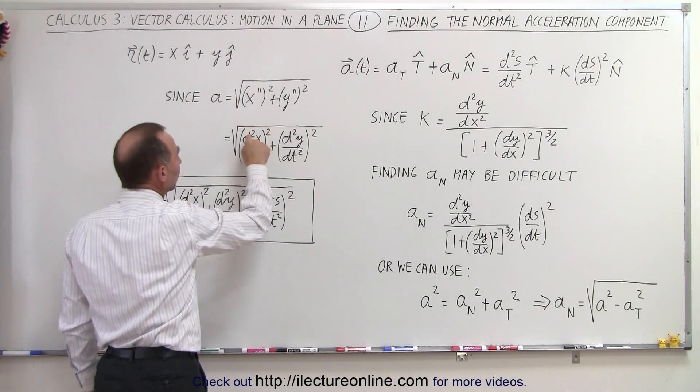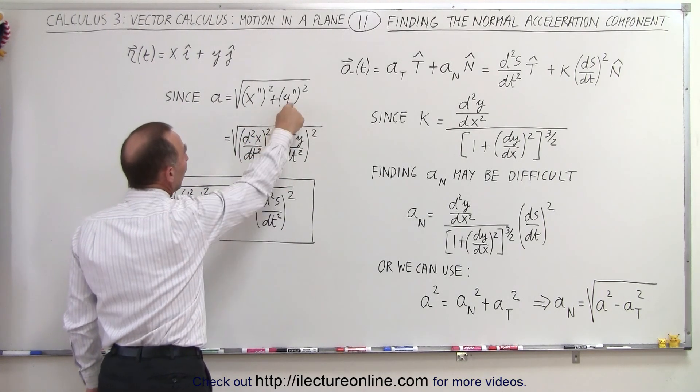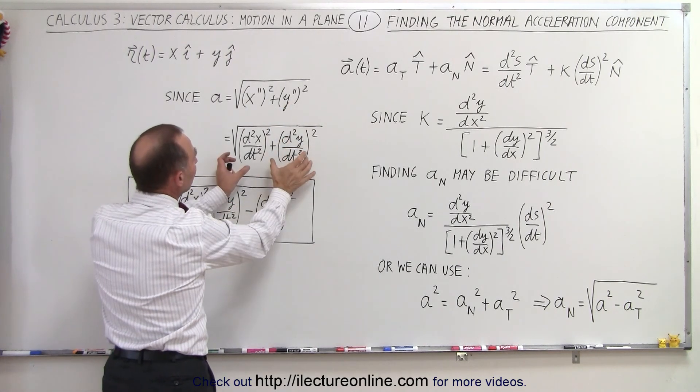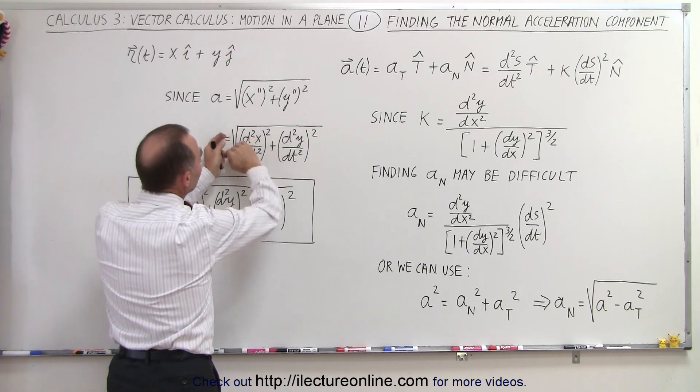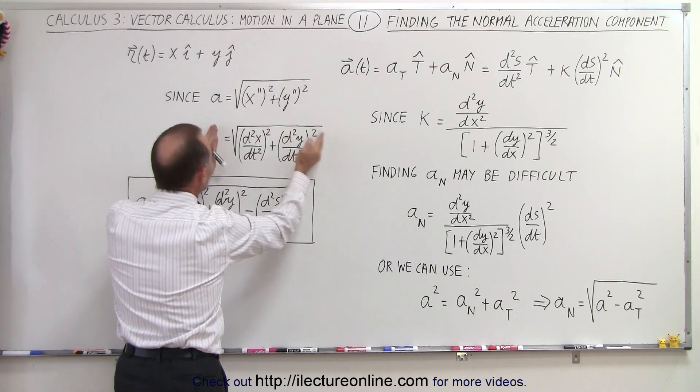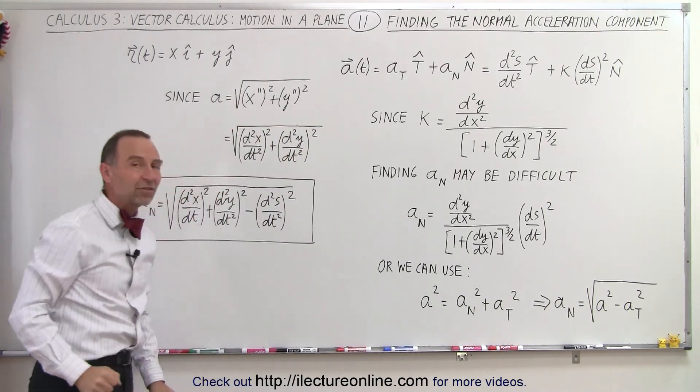So x double prime is d squared x dt squared, y double prime is d squared y dt squared. We take those two, we square them, we add them together, take the square root, that's the magnitude of the acceleration vector.